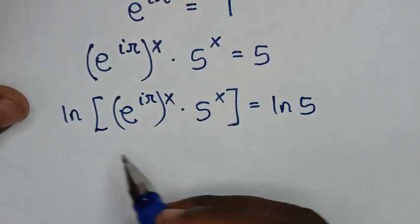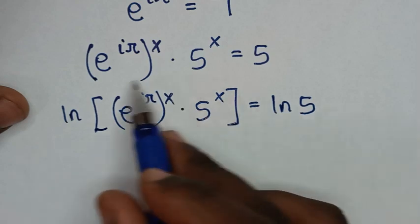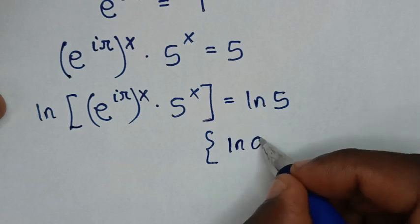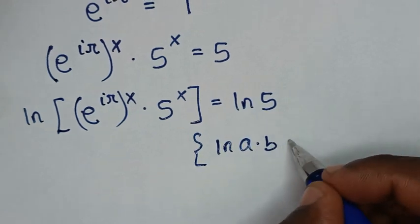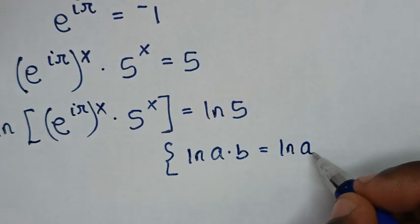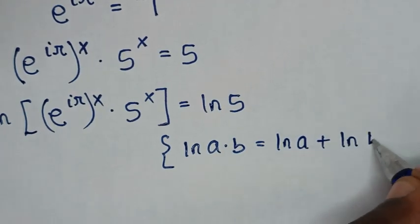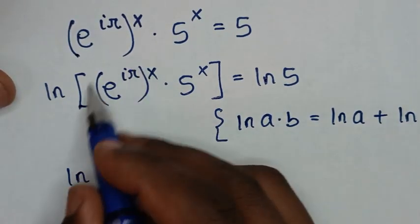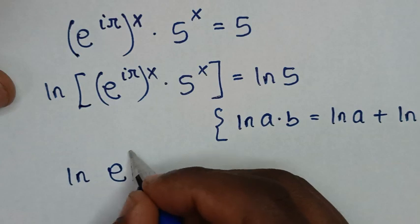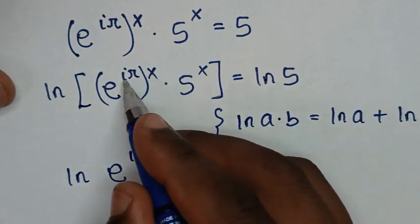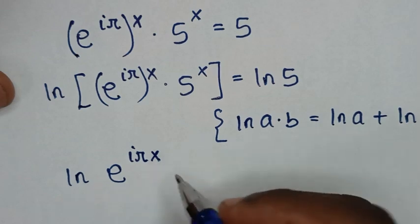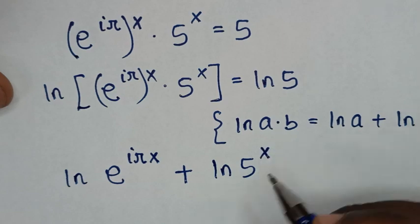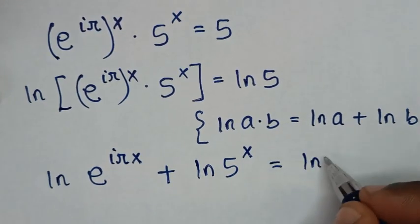From this part here, we'll apply the rule: ln of a times b equals ln of a plus ln of b. So it will be ln of e to the power iπ times x — that is iπx — plus ln of 5 to the power x, is equal to ln of 5.